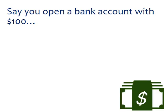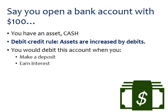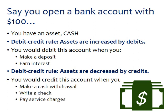Let's go through an example. Say you open a bank account by depositing $100. You have an asset — cash. The debit/credit rules state that assets are increased by debits, so you would debit your account when you make a deposit or earn interest. Assets are decreased by credits, so you would credit your cash account when you make a cash withdrawal, write a check, or pay bank service charges.